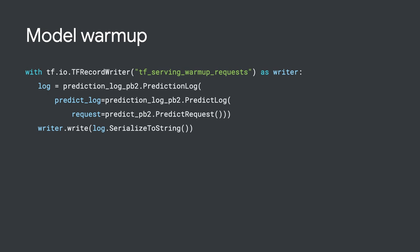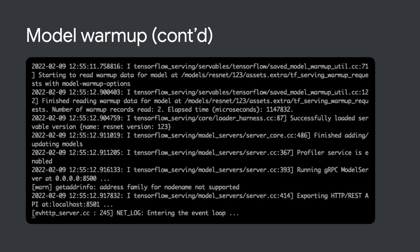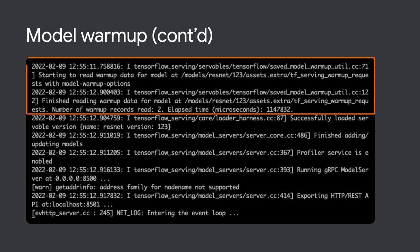The next tip is model warmup. TensorFlow Runtime has components that are lazily initialized, which can cause high latency for the first request — and this latency can be quite significant. To reduce the impact of lazy initialization, it's possible to trigger the initialization of these components at model load time by providing a sample set of inference requests along with the saved model. This process is known as warming up the model. The example code shows how to create a warmup file. Once you put the warmup request file in the assets-extra folder in your saved model folder, you will see a confirmation message when starting the TF Serving model server, and this will reduce the latency of the first request.